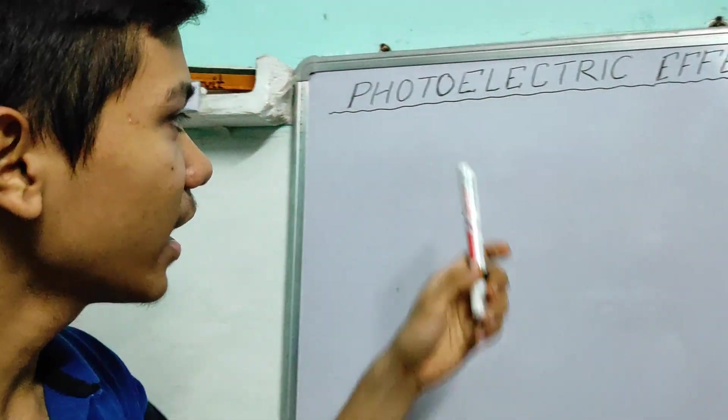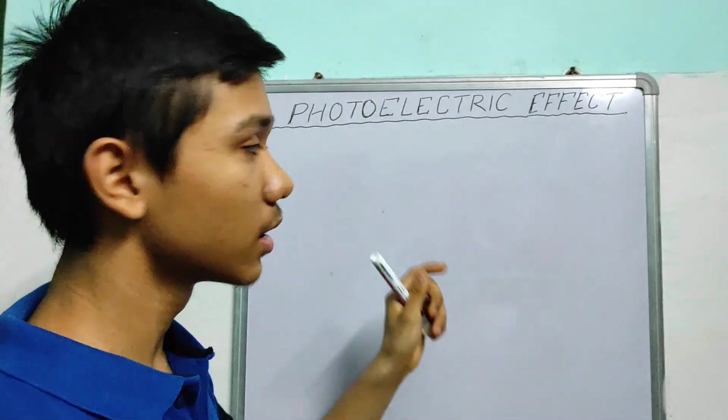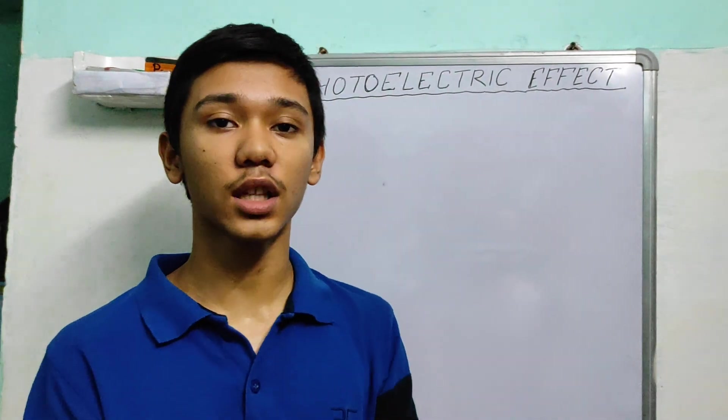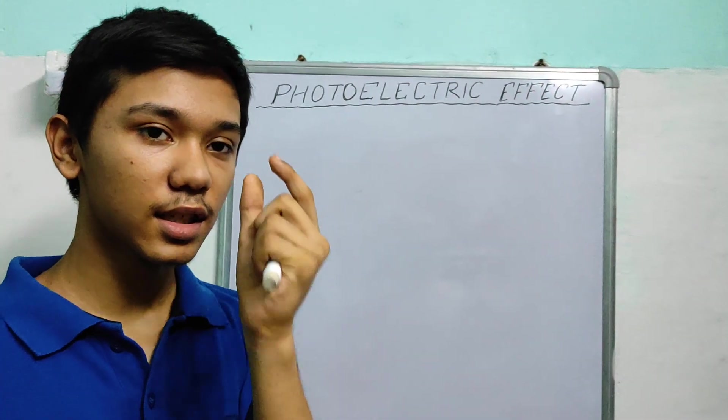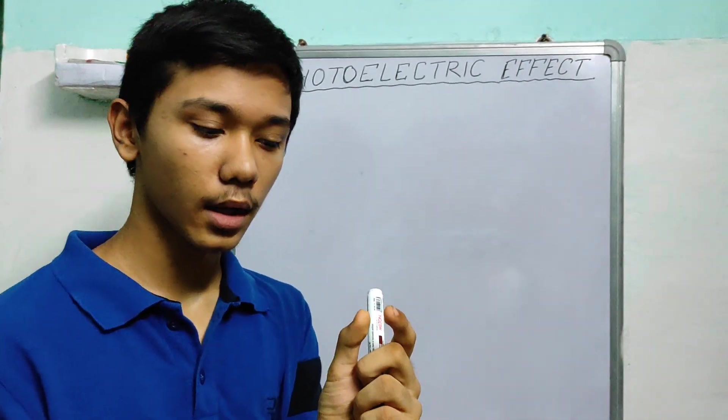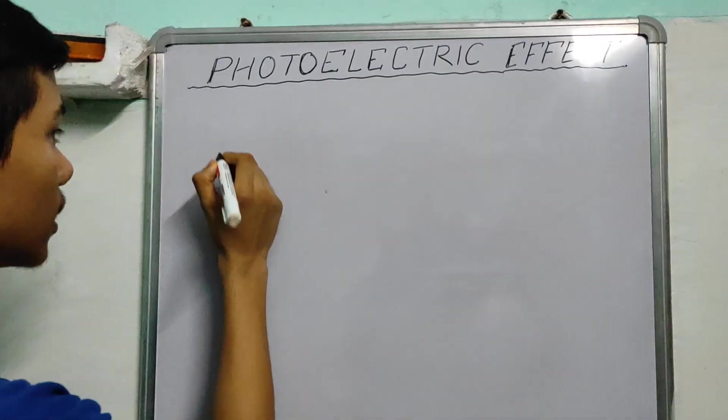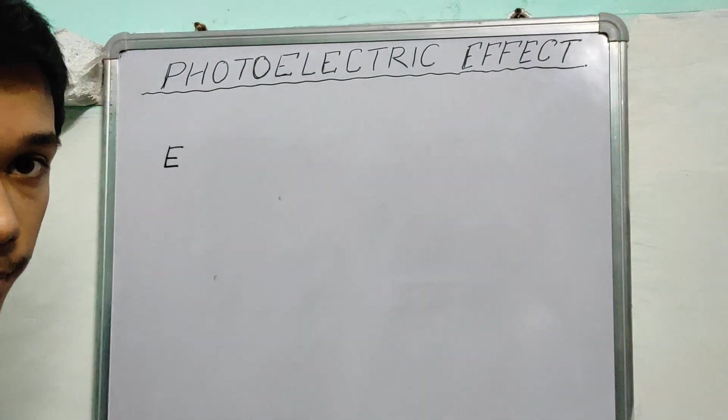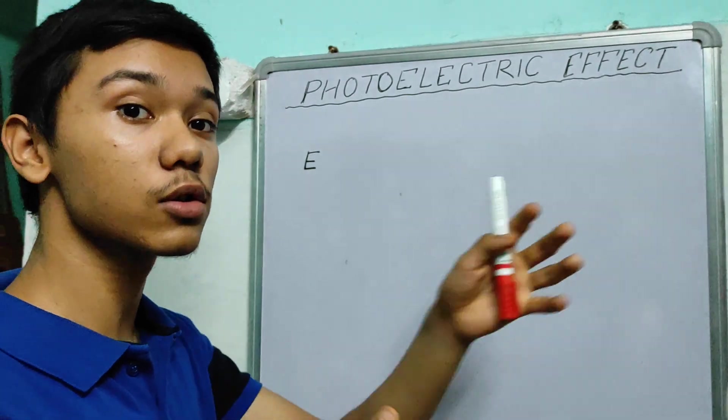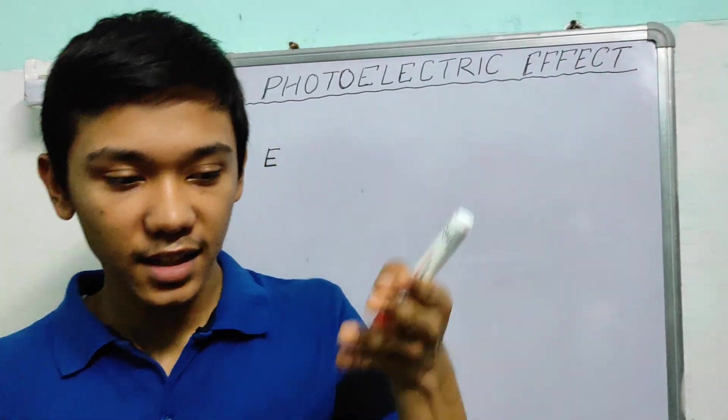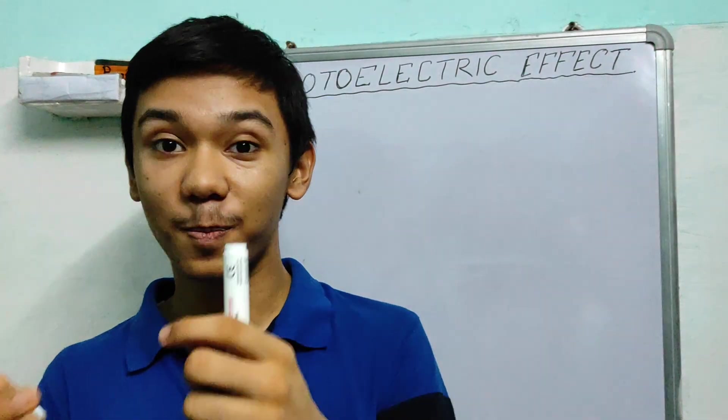Since light is considered to be a particle, this particle is called a photon and the theory in which light is described as a photon is the photon theory or the quantum theory of light. This particle called photon has an energy associated with it. I am giving you the exact formula straight away.